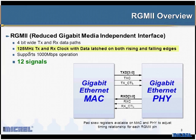Something to note when you use RGMII is that there are pad skew registers. These pad skew registers are available on the MAC and also on the PHY. They're necessary so you can adjust the timing relationship between each of the RGMII signals and how they work with the MAC and PHY.